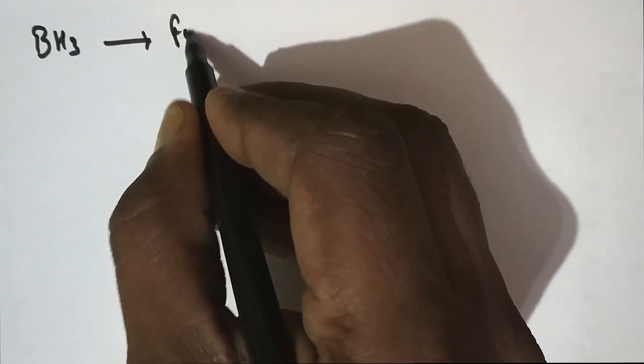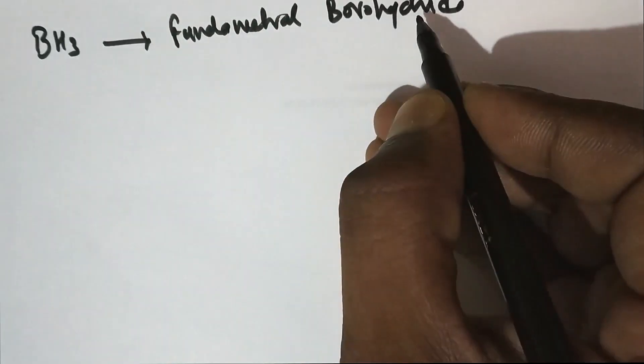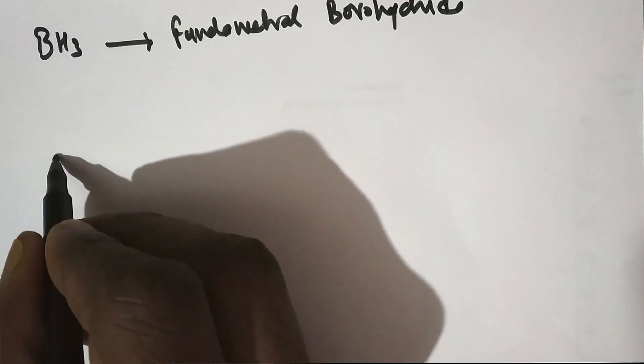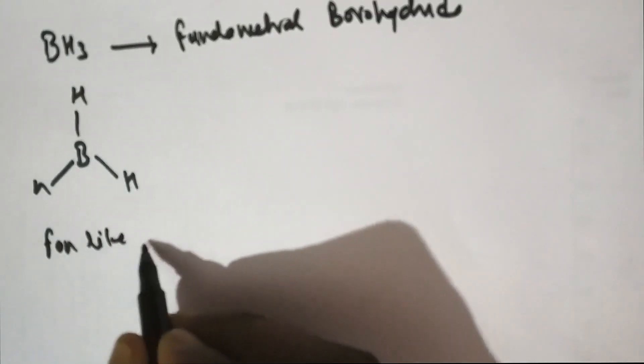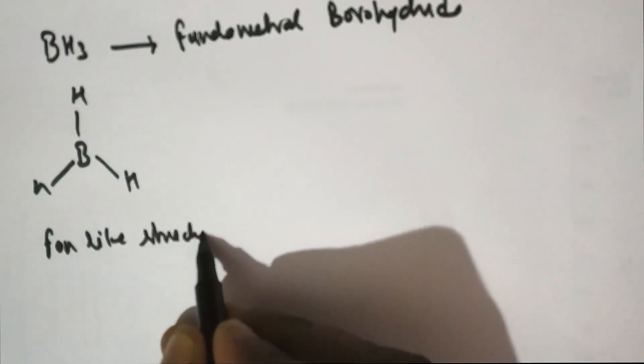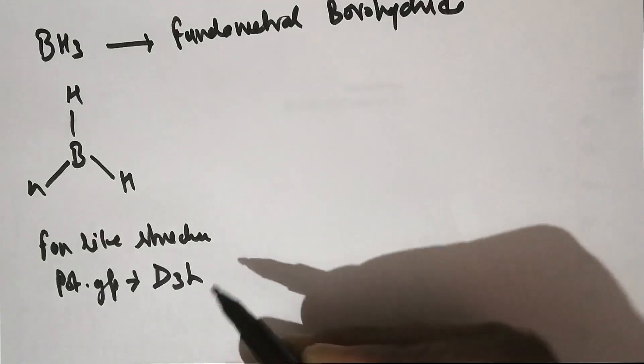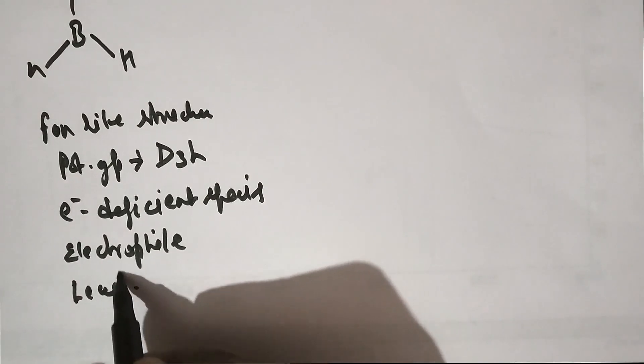Now we will discuss a simple structure: BH3. This is a fundamental borane, also called fundamental borohydride. Its structure is planar — a plane-like structure. Its point group is D3h. It is also an electron-deficient species, so we can term it an electrophile, or we can also name this molecule as a Lewis acid.